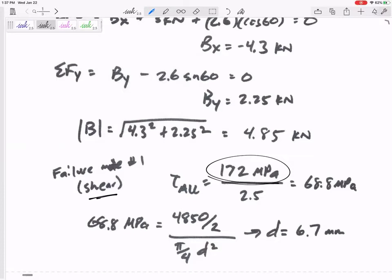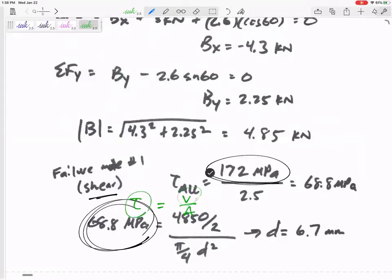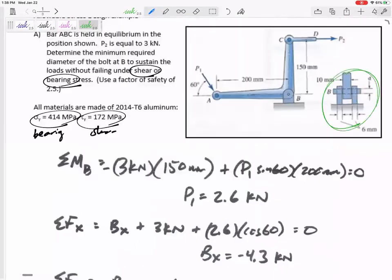So instead of letting the stress get to 172, I'm only setting it to 68.8 MPa. If you're told a factor of safety, use it. I know tau equals V over A. I know tau is 68.8, I know that V is 4.85, but I divide it by two. Why? Because this side view showed me it's a double shear connection.